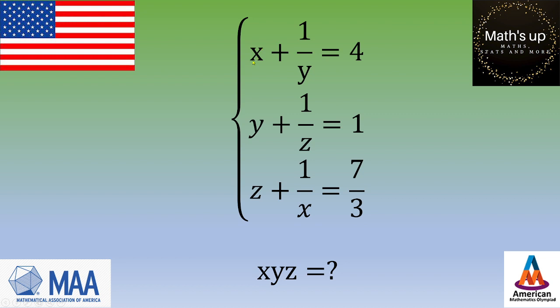We know that x plus 1 over y equals 4, y plus 1 over z equals 1, and z plus 1 over x equals 7 thirds. And the question is, what is the value of xyz?